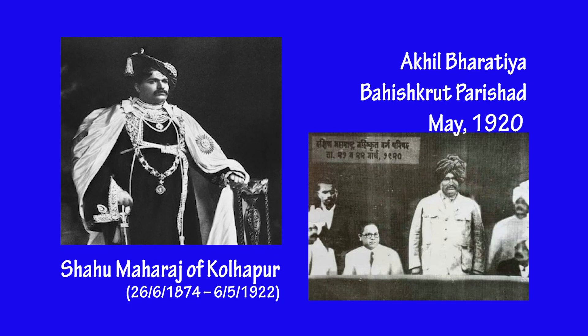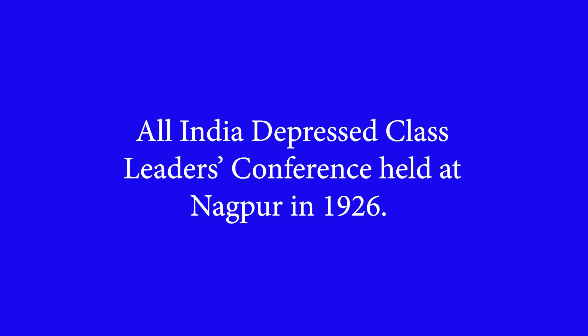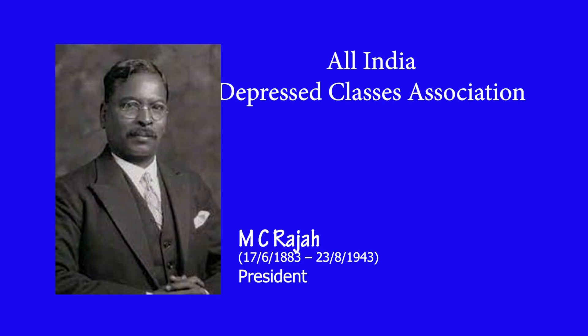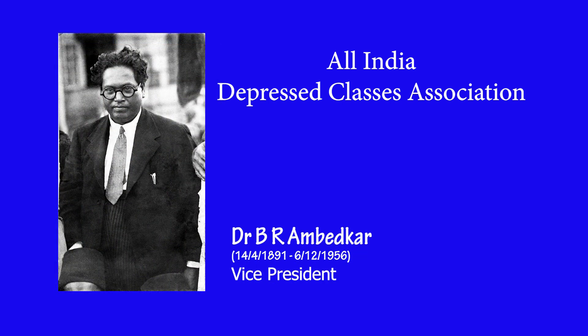A small beginning was made by the Maharaja of Kolhapur in May 1920 when the Akhil Bharatiya Bahishkrut Parishad, or the All India Depressed Classes Conference, was held. However, the actual pan-Indian Dalit movement at an organized level started at the All India Depressed Class Leaders Conference held in the same city but in 1926. Here, the All India Depressed Classes Association was formed with the famous Dalit leader M.C. Raja of Madras as its first elected president. Dr. Ambedkar, who was a rising star at the time, did not attend but was elected as one of the vice presidents.